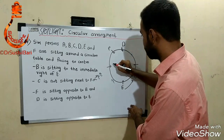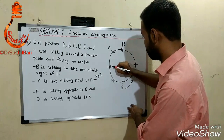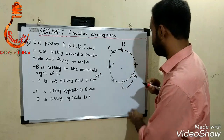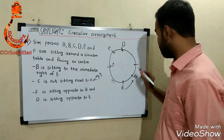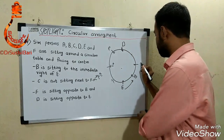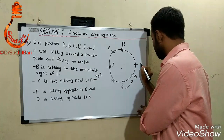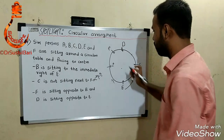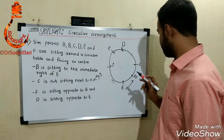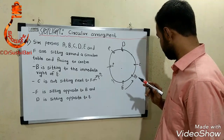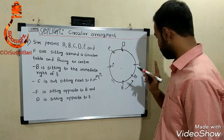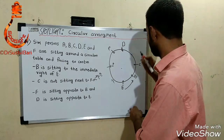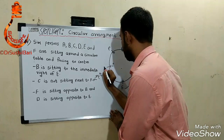C is not sitting next to F, so C will definitely not come in the positions adjacent to F. The remaining single place is for C, so C is placed here. The only missing person is A, so A goes in the last remaining position.